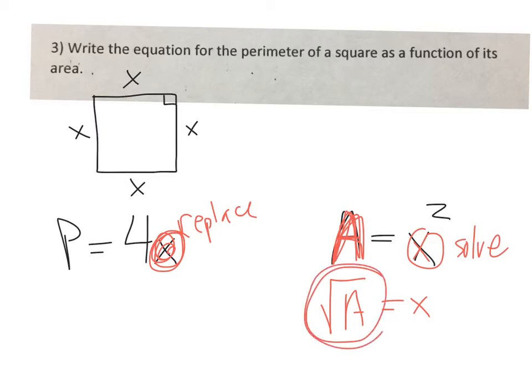So now that I have solved this equation for x, I can replace over there. So perimeter would be 4 times the square root of the area.